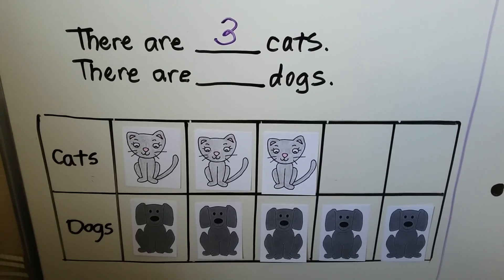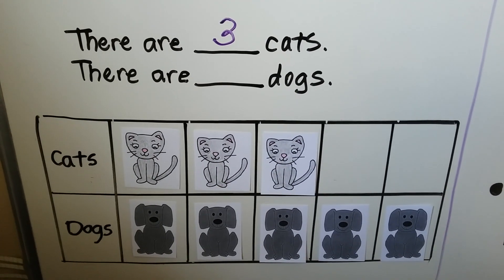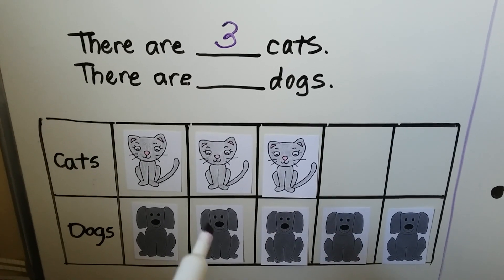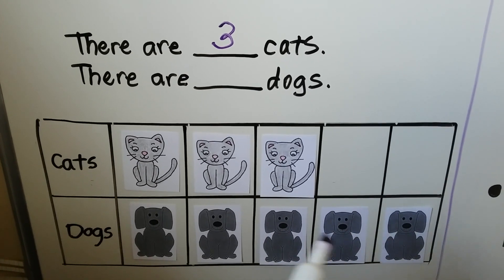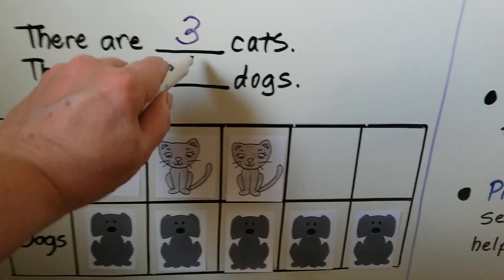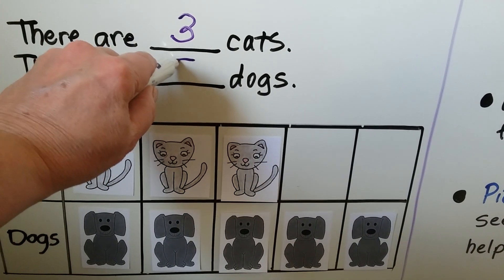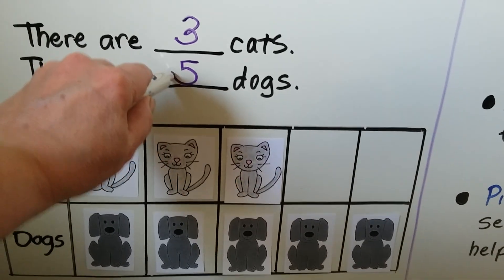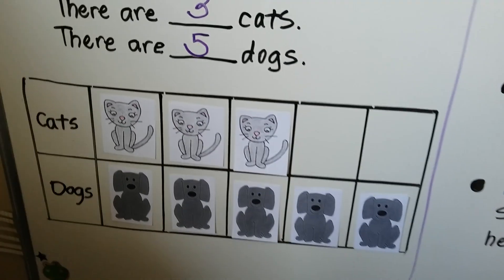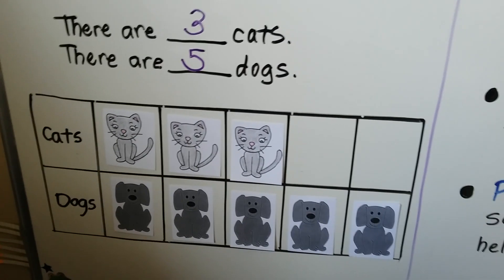How many dogs are there? One, two, three, four, five dogs. It makes it easy to see how many, doesn't it?